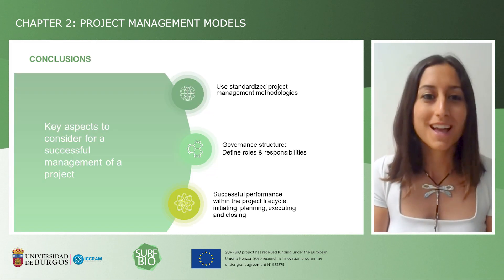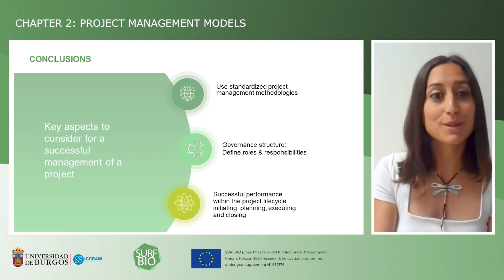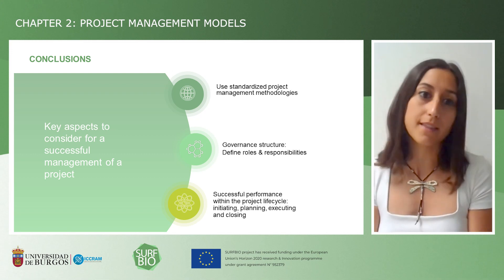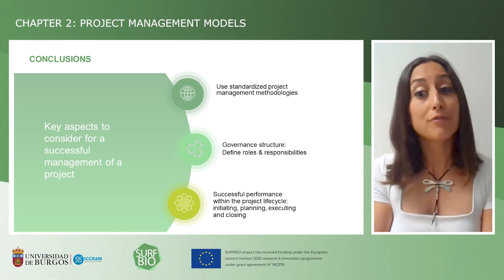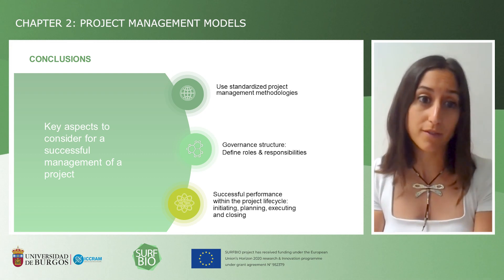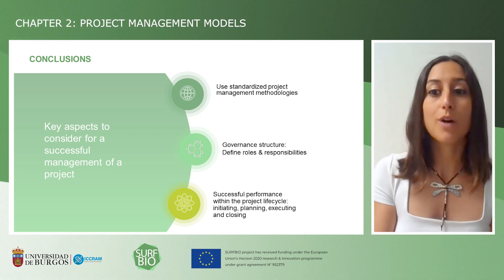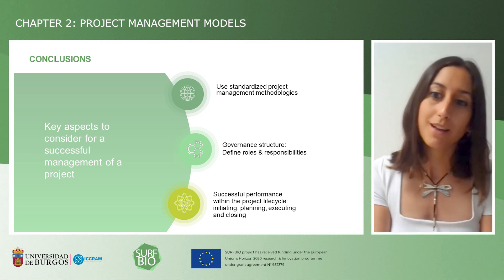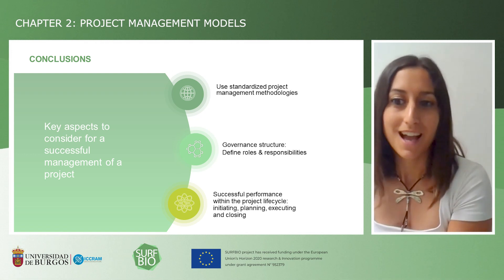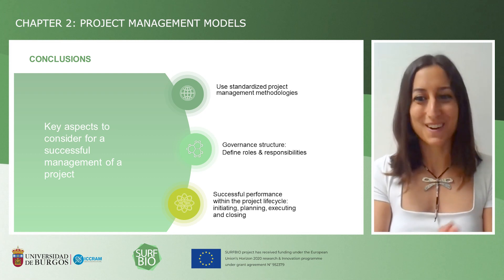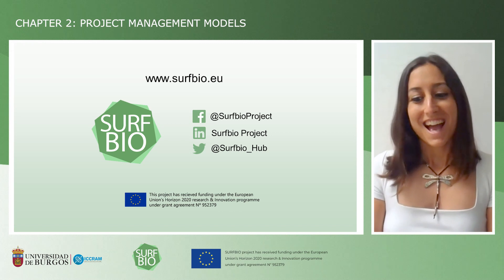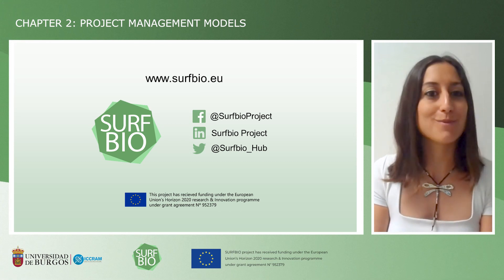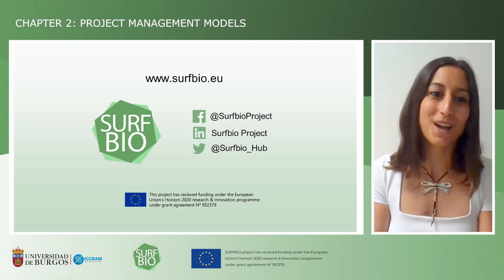To conclude, I would like to highlight that the key aspects to consider for a project to be successful are: the use of standardised project management methodologies, the definition of roles and responsibilities of the people involved, and having the four phases of the project lifecycle very clear — initiating, planning, executing, and closing. With this, hopefully there will be a successful project performance. If you need further information, please follow the links below where you can find more references. I hope this was very useful. Thank you so much for listening.